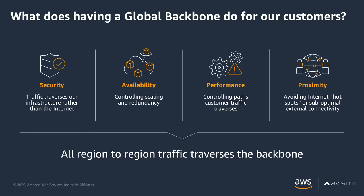And finally, proximity. More and more applications today have a global user base. You might be hosting your service in one AWS region but have users all over the world. So we make sure that our backbone spans to all of those locations, so your customers' traffic, rather than coming in over local ISPs, is coming in over the AWS backbone. All region-to-region traffic, with the exception of the China region, traverses our backbone.